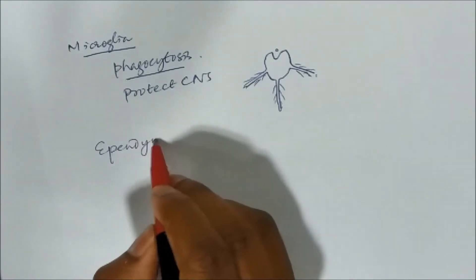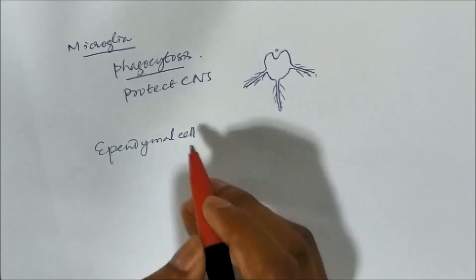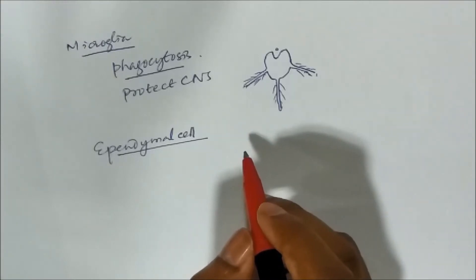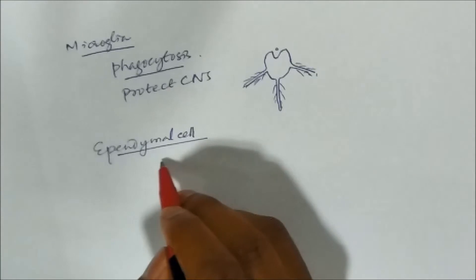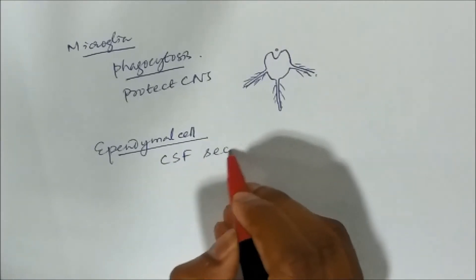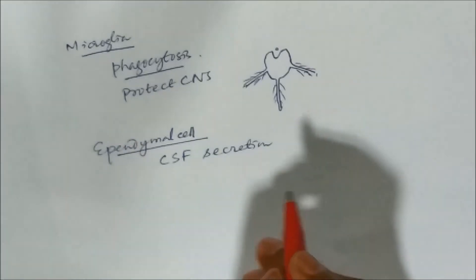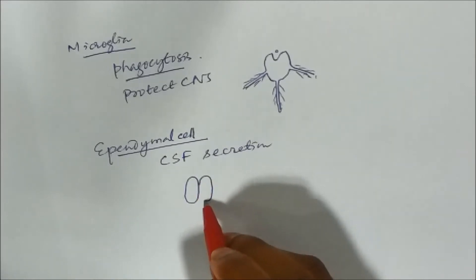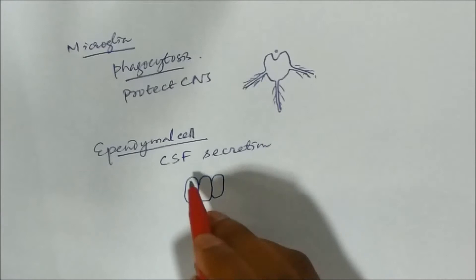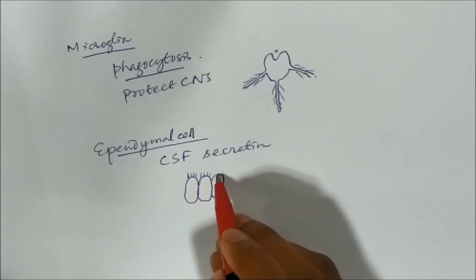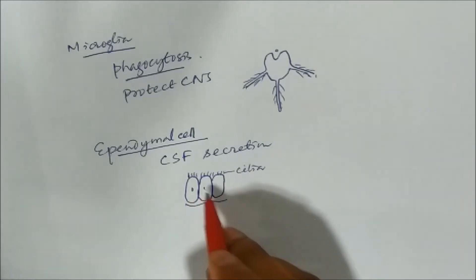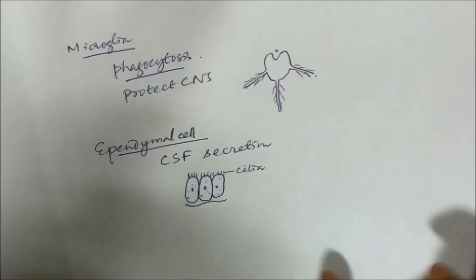The fourth type is ependymal cells. Ependymal cells lie in the brain ventricles and the central canal of the spinal cord. Their main function is cerebrospinal fluid (CSF) secretion — they act as a filter medium and help in the secretion of cerebrospinal fluid.